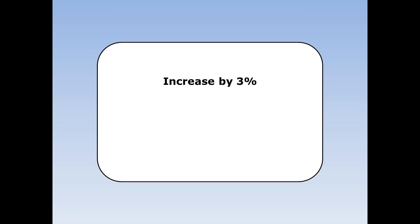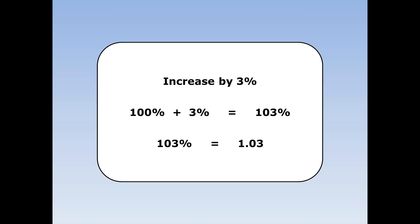To increase something by 3%, I want the original 100% plus an extra 3%. 100% plus 3% is 103%. 103% as a decimal is 1.03. So to increase something by 3%, multiply by 1.03.